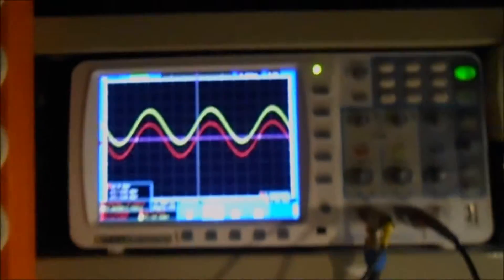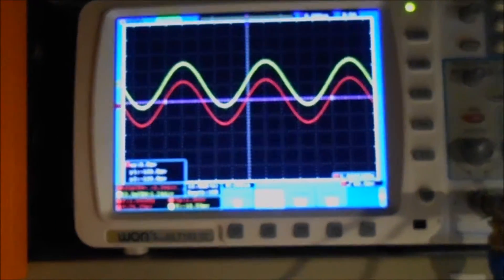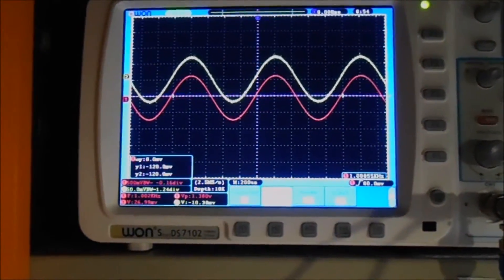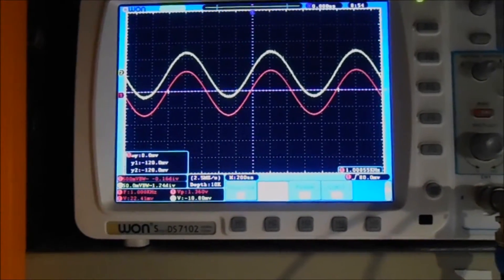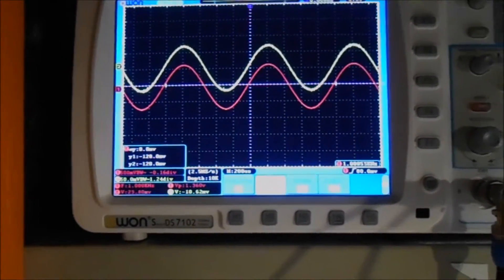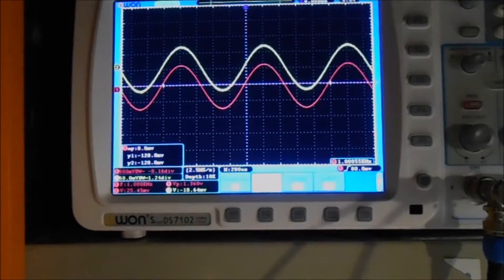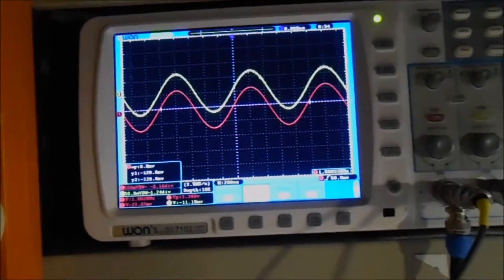And as you can see in my scope, you have the yellow trace. The yellow trace is the input signal and the red trace is the output signal. Now we have the same signal input and output because the processor is in bypass mode.